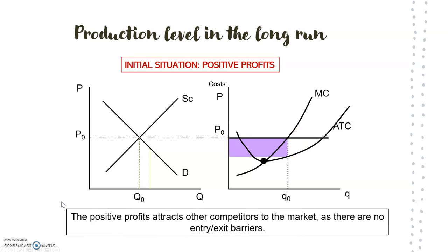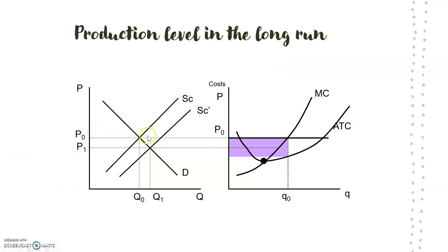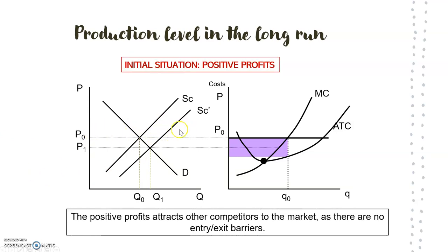What is going to happen is that these positive profits are going to attract other competitors to the market, since there are no entry or exit barriers. More and more companies will enter the market, so the supply curve is going to shift to the right in a parallel way. We will have more firms in the market providing this product, so the price will go down because we have more producers, and the quantity exchanged in the market will increase.